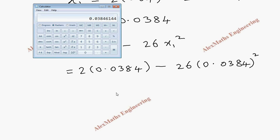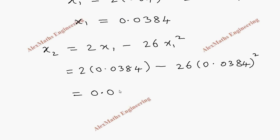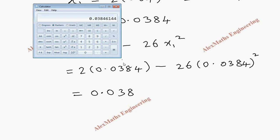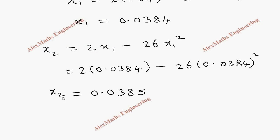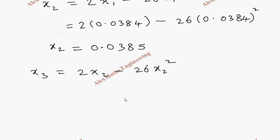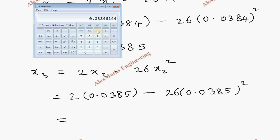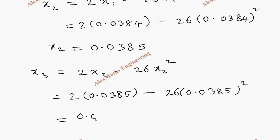And after rounding up to 4 decimal places, it is 0.0385. This is our x_2. Now x_3 is 2x_2 minus 26 x_2 square. This is 2 times 0.0385 minus 26 times 0.0385 square. After rounding up, we get the same value: x_2 equal to x_3 equal to 0.0385.